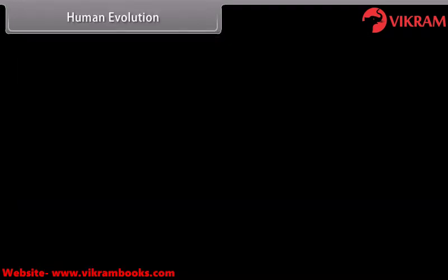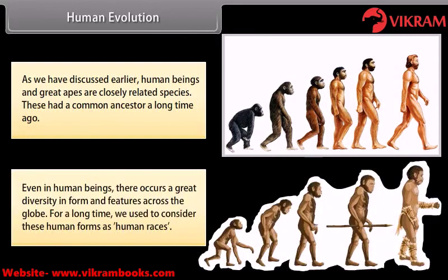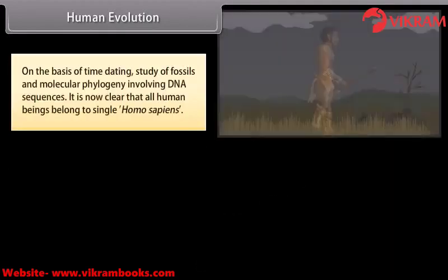Human beings and great apes are closely related species that had a common ancestor a long time ago. Even among human beings there is great diversity in form and features across the globe. For a long time these human forms were considered as human races, but on the basis of time-dating study of fossils and molecular phylogeny involving DNA sequences, it is now clear that all human beings belong to a single species — Homo sapiens.